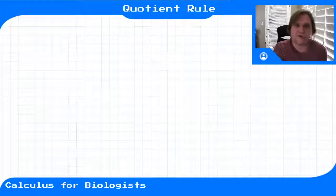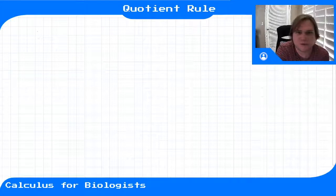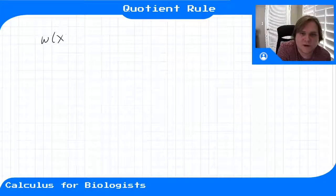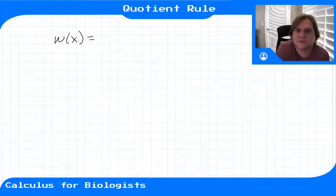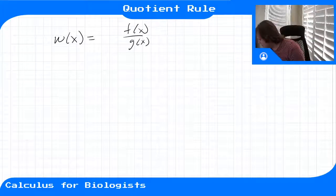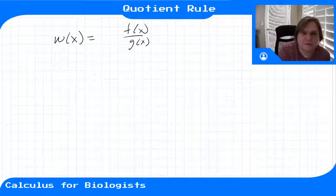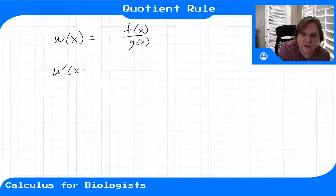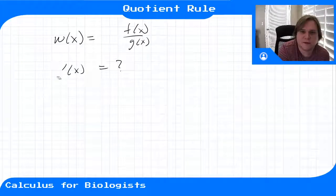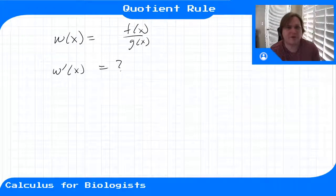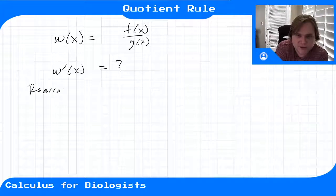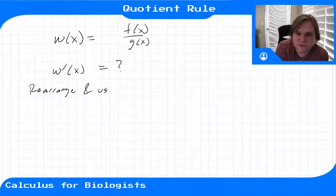The last derivative rule we'll go over this week is the quotient rule. Let's say you have a function w of x equal to f of x over g of x, and we want to find the derivative w prime of x. With a little trick, we can rearrange this and use the product rule to derive the quotient rule.